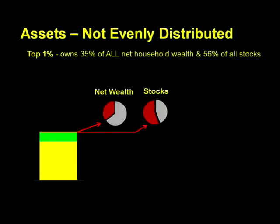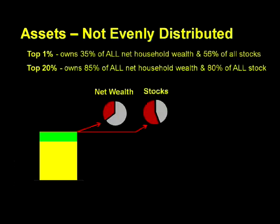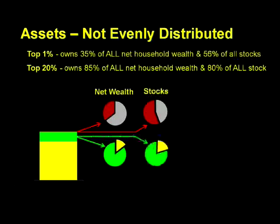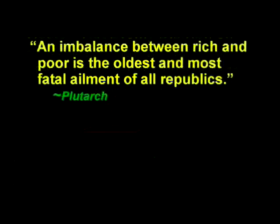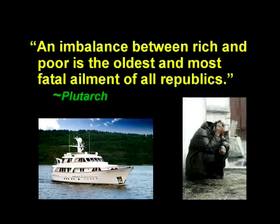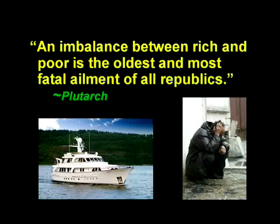The top 20%, which includes the top 1%, owns 85% of all household net wealth and 80% of all stocks by value. This means that the bottom 80% of the citizens of this country, represented in yellow, holds only 15% of the total wealth of this country. Remember, an imbalance between rich and poor is the oldest and most fatal ailment of all republics. More immediately, this tells us that our credit crisis is going to be worse than advertised. Just as was true of the wealth gap in the late 1920s before the onset of the Great Depression, the severity of the crisis will not depend on average wealth, but on the distribution of the wealth. If a large swath of the population lacks the means to weather the storm, then that storm will be longer and harsher than otherwise would be the case.